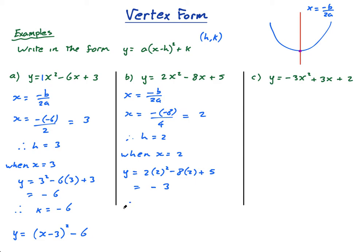Therefore k equals negative 3, and then I can write it out again. Y equals a is 2, x minus h squared, plus k is minus 3. Now, obviously, if h is negative 2, it becomes x minus negative 2, which would be x plus 2. Final one, same thing.